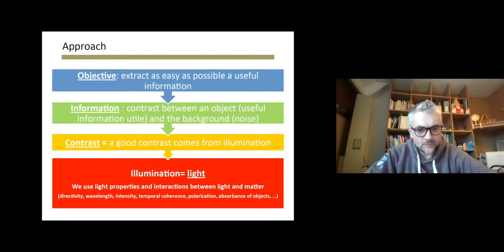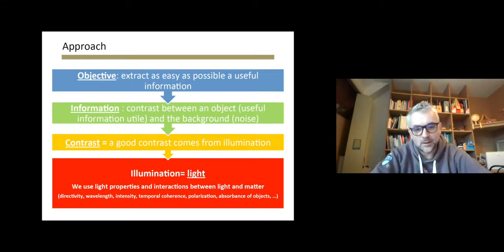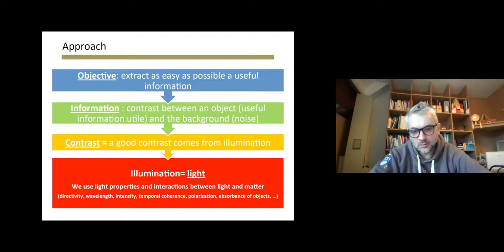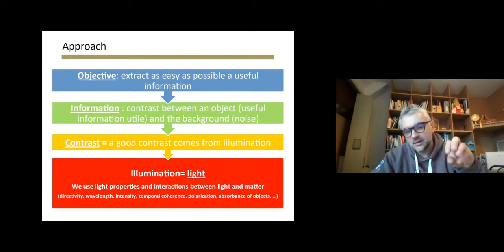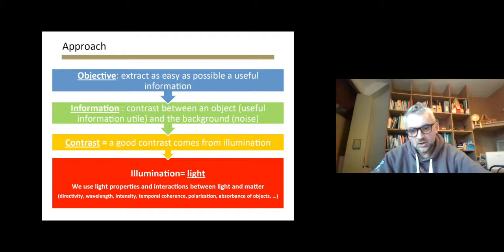We can tune various properties of light, including directivity, wavelength meaning color, intensity, and temporal coherence. Temporal coherence is related to whether you have a single wave or multiple waves in your light — a single wave being the type of source called a laser. You can also tune polarization or absorbance of objects. We will take all of these light properties and illustrate on simple use cases how they can be tuned to enhance contrast and simplify your image.